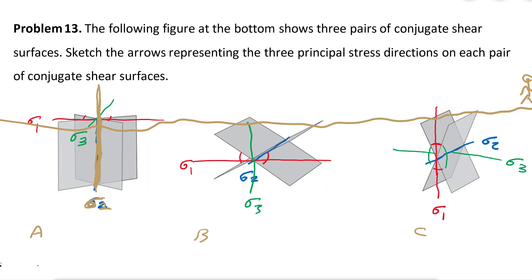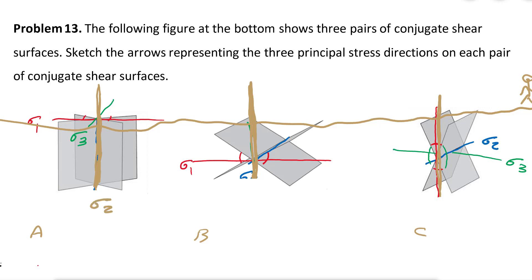In figure B, Sigma 3 is perpendicular to the earth's surface. In figure C, Sigma 1 is perpendicular to the earth's surface. So in these three scenarios we have Sigma 2, Sigma 3, and Sigma 1 respectively perpendicular to the surface. If Sigma 2 is perpendicular to the earth's surface, we are going to have strike-slip faults.